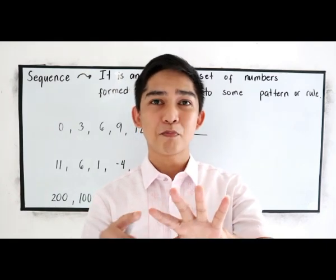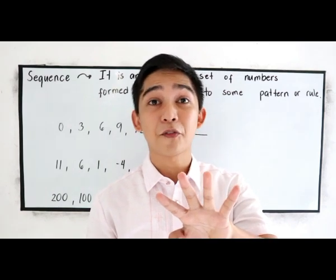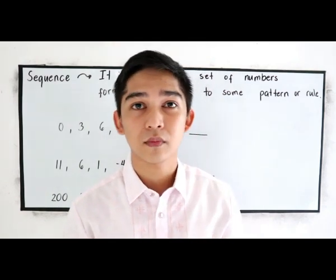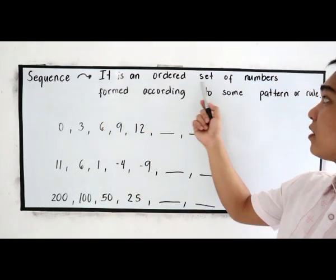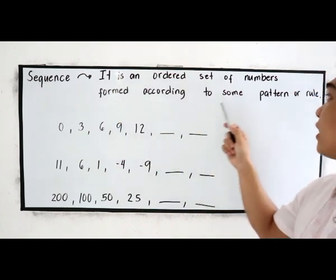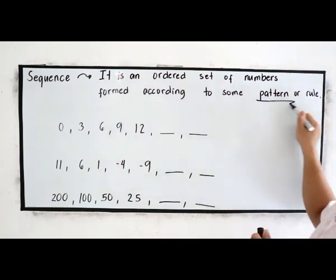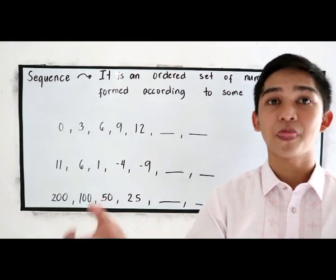But before we discuss all those four sequences, let us first define what is a sequence. A sequence is an ordered set of numbers formed according to some pattern or rule. So sequence is dealing about the pattern or rule.